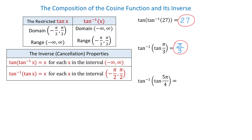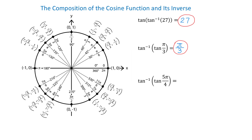We can still evaluate this expression by first evaluating the expression inside the parenthesis using the unit circle. At the angle of 5 pi over 4, tangent of 5 pi over 4 equals 1, because tangent is y divided by x, and negative square root of 2 over 2 divided by negative square root of 2 over 2 equals 1. So now we have inverse tangent of 1. Because the range of the inverse tangent function is between negative pi over 2 and positive pi over 2, we need the angle in that interval whose tangent is 1. That angle is pi over 4, so the answer is pi over 4.